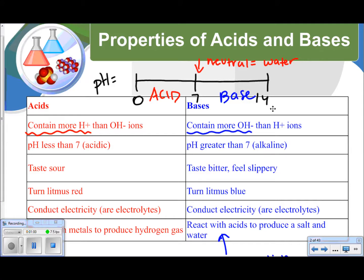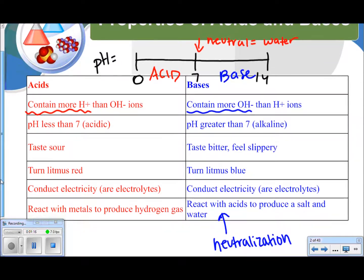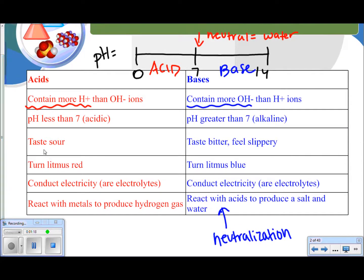Bases are going to contain more hydroxide ions than hydrogen ions. Their pH is greater than 7. We call this alkaline. They are going to taste bitter and feel slippery. They will turn litmus paper blue. They will also conduct electricity, because bases also are electrolytes. And they will react with acids to produce a salt and water. This is known as neutralization.